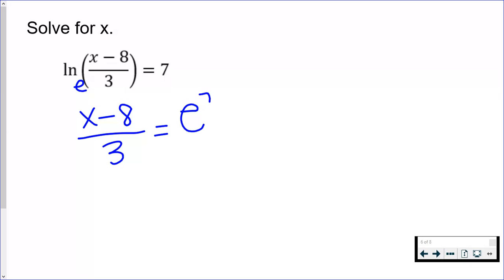e to the seventh is a big number. You should get 1096.63 and some other digits after that. Please don't clear it from your calculator — make sure you're getting the same thing as me.